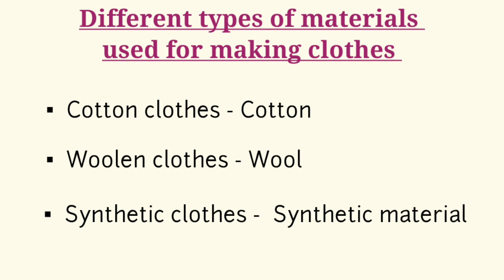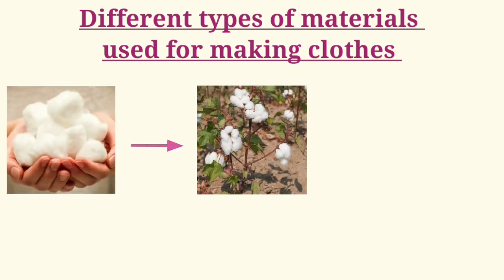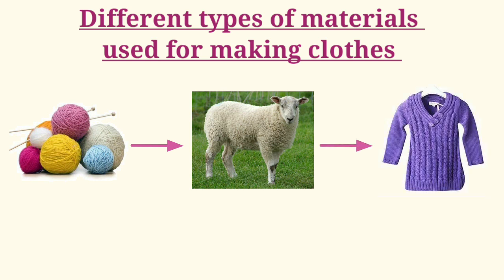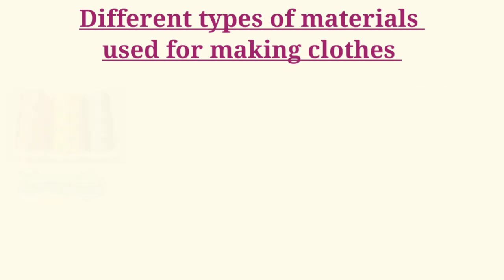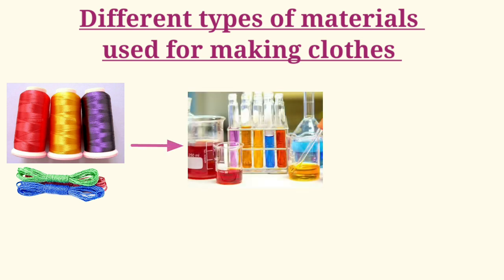You know children, we get cotton from a cotton plant. An example of cotton cloth is a cotton t-shirt. We get wool from sheep. An example of woolen cloth is a woolen sweater. And we get synthetic material by combining different chemicals in the laboratories. An example of synthetic material is a raincoat, which we wear on rainy days.